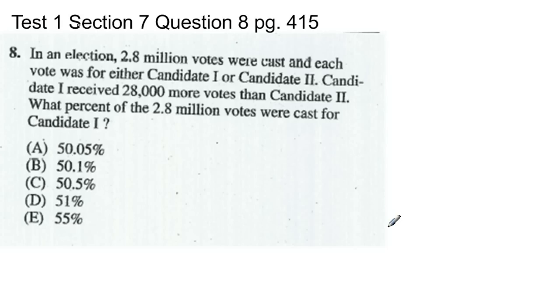Let's take a look at the next question. This comes from Test 1, Section 7, Question 8, found on page 415. It says in an election, 2.8 million votes were cast, and each vote was either for candidate 1 or candidate 2. Candidate 1 received 28,000 more votes than candidate 2. What percent of the 2.8 million votes were cast for candidate 1? Many people are going to start this off by splitting candidate 1 and candidate 2 into two columns. They'll say candidate 1 received X plus 28,000, and candidate 2 received X votes. Then they'll solve it using all this math that's going to take a really long time. There's a much, much easier way to do that.